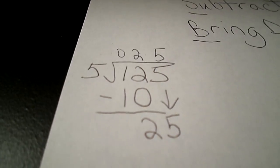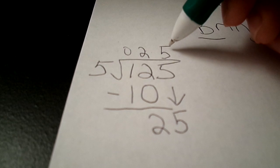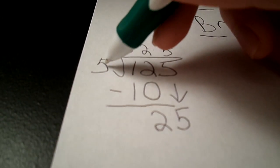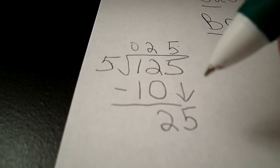Our next step is the multiply. So we multiply the 5 that we just put up here times 5. That is 25.